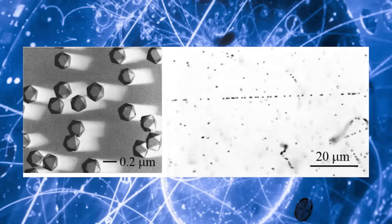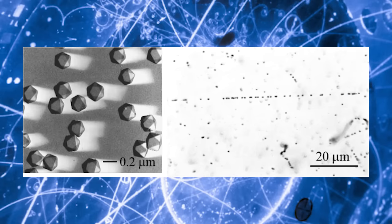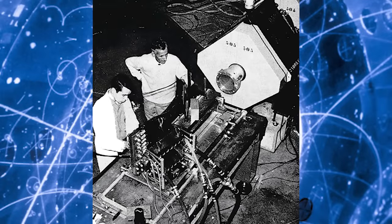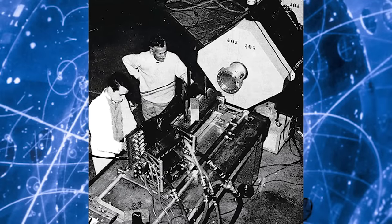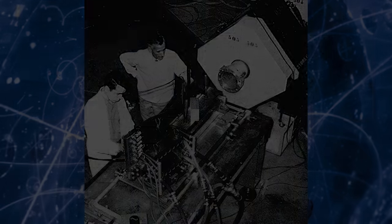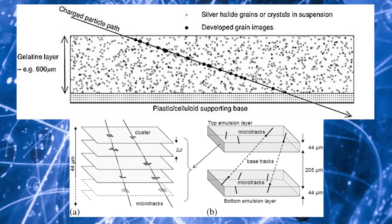A typical emulsion detector consists of silver bromide crystals with diameters of 200 nanometers dispersed in gelatin. When a charged particle traverses the emulsion, it ionizes the crystals within it, leaving a trail of ionization that can later be developed like a photographic film. Cameras can then scan the emulsion in 3D to identify dark developed grains, join them together to create tracks, and recreate the paths taken by charged particles traversing the emulsion.